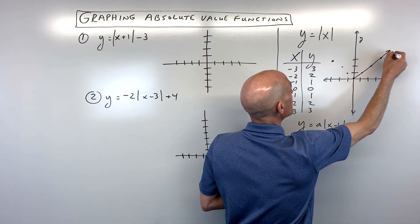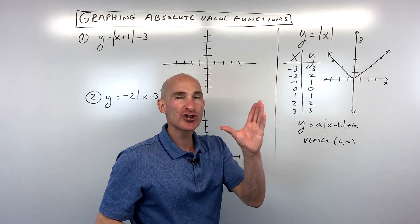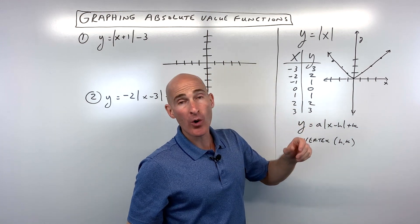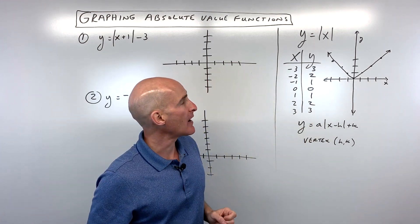And it keeps going like that. And notice how we're getting this real sharp V, this real sharp corner here, as opposed to a quadratic where it's got that U shape, that parabola shape.